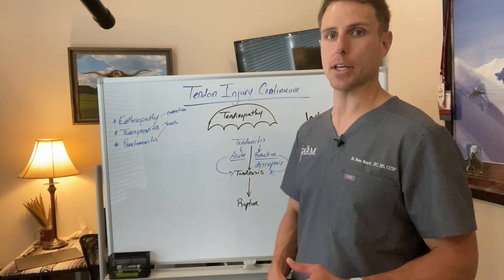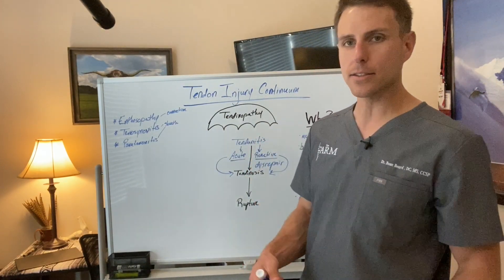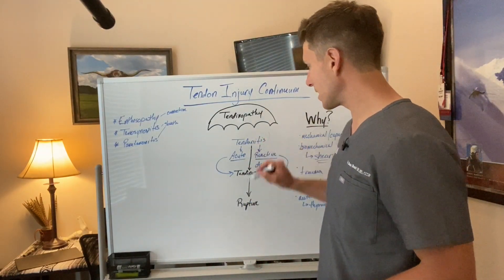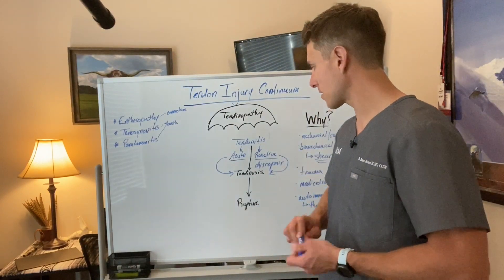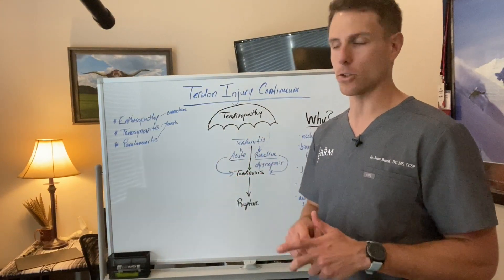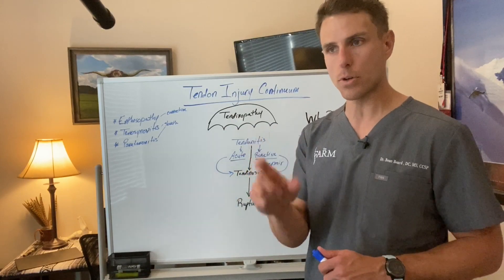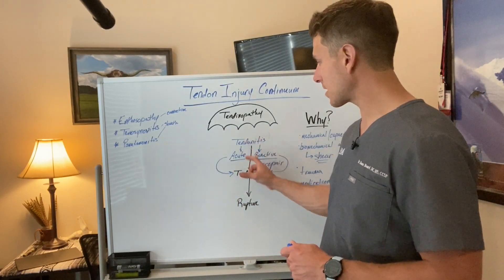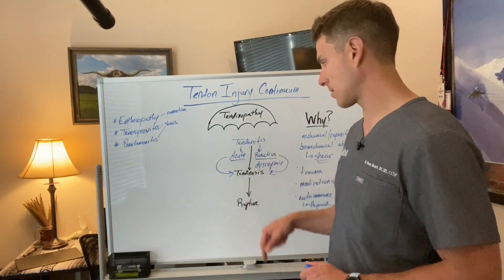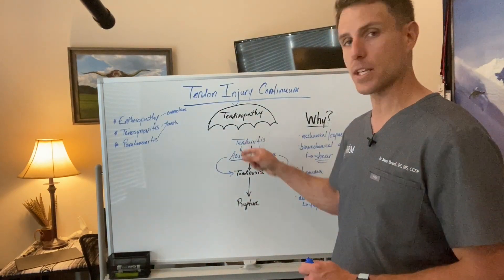So tendinitis — that's the most common thing. Think lateral epicondylitis, Achilles tendonitis, patellar tendonitis — we throw out this 'itis,' and the 'itis' means that something is inflammatory. Tendonitis is going to have two phases or two subcategories. You're going to have acute tendonitis — that's part of the definition of tendonitis — it's the acute irritation of a tendon without disrepair. Now if that acute phase goes on a little bit too long, you're going to have reactive tendonitis.